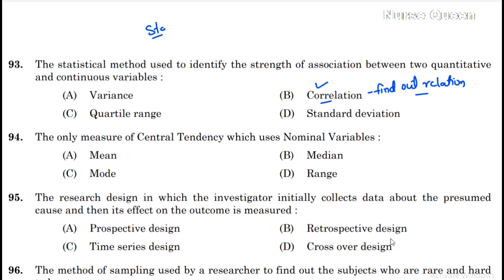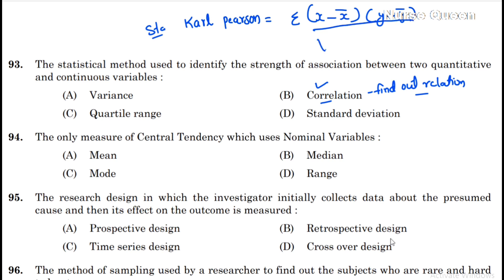The correlation coefficient formula is a measure of correlation. The Carl Pearson correlation coefficient formula is: sigma (x minus x-bar) times (y minus y-bar), divided by the square root of sigma (x minus x-bar) squared times the square root of (y minus y-bar) squared. This is the formula.